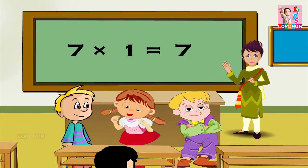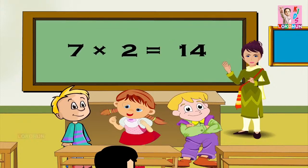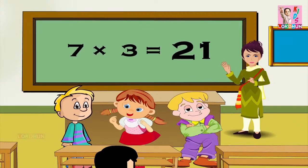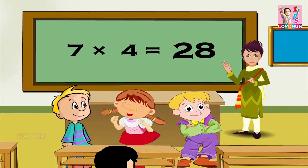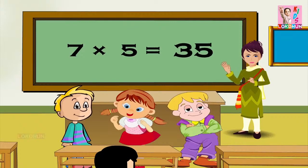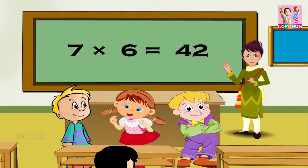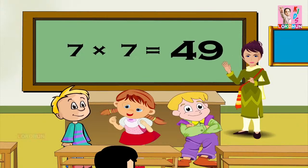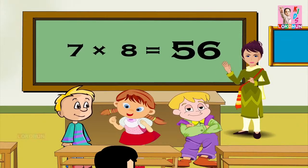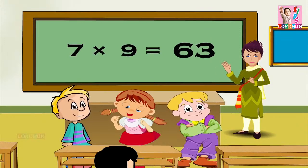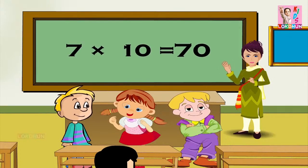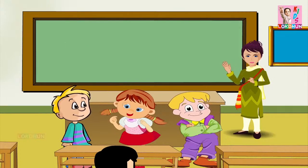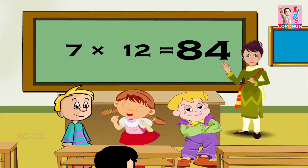Seven ones are seven, seven twos are fourteen, seven threes are twenty-one, seven fours are twenty-eight, seven fives are thirty-five, seven sixes are forty-two, seven sevens are forty-nine, seven eights are fifty-six, seven nines are sixty-three, seven tens are seventy, seven elevens are seventy-seven, and seven twelves are eighty-four.